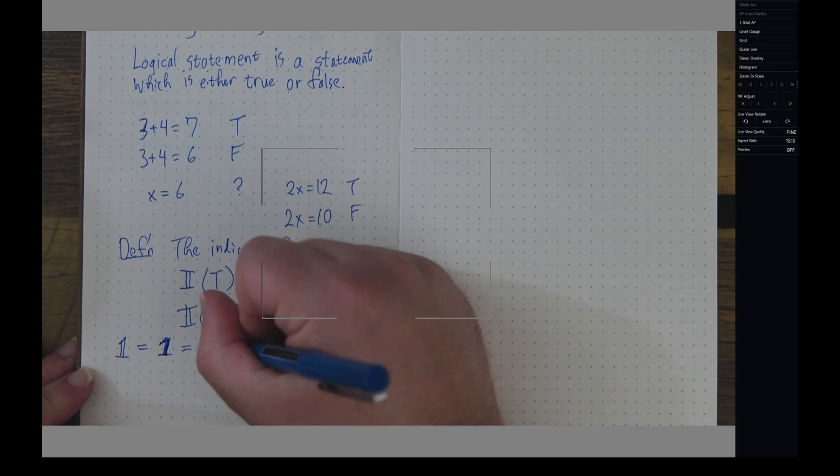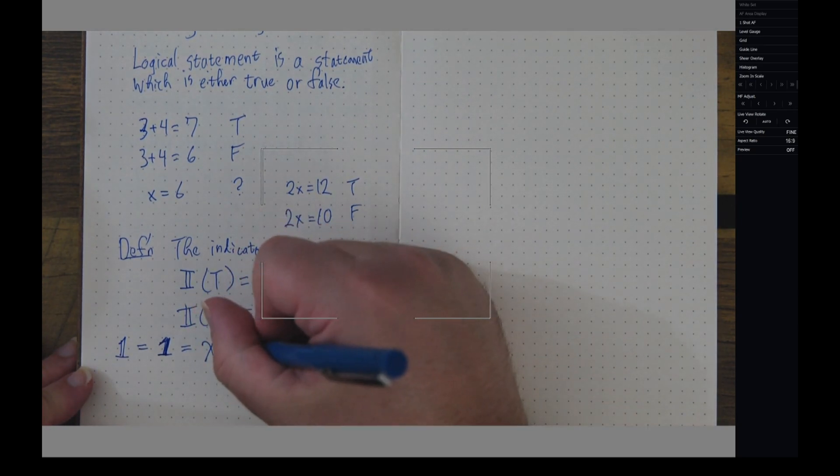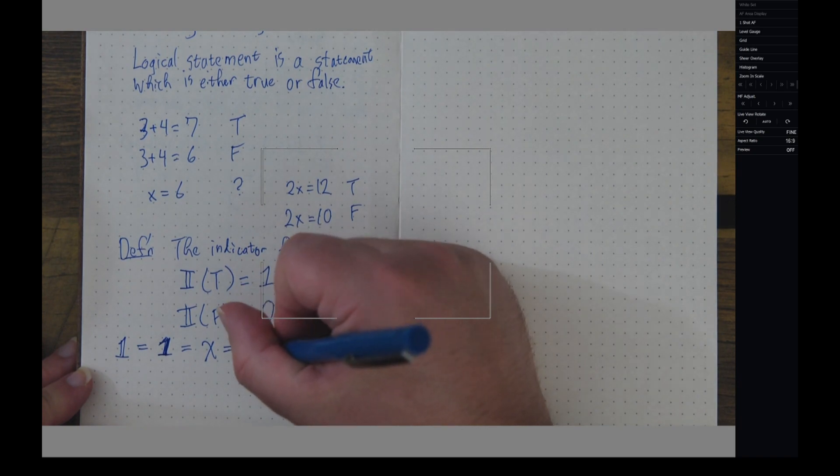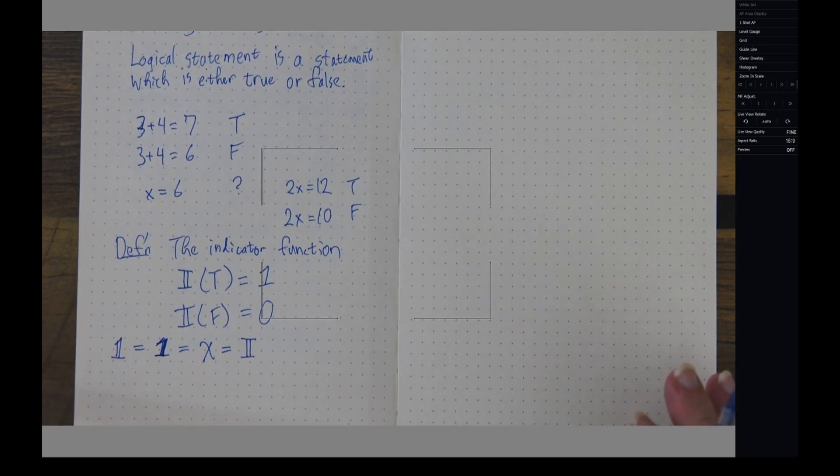Sometimes we even use a capital letter chi. But for our purposes, I'm just going to use this blackboard boldface capital I. And that's going to be my indicator function.